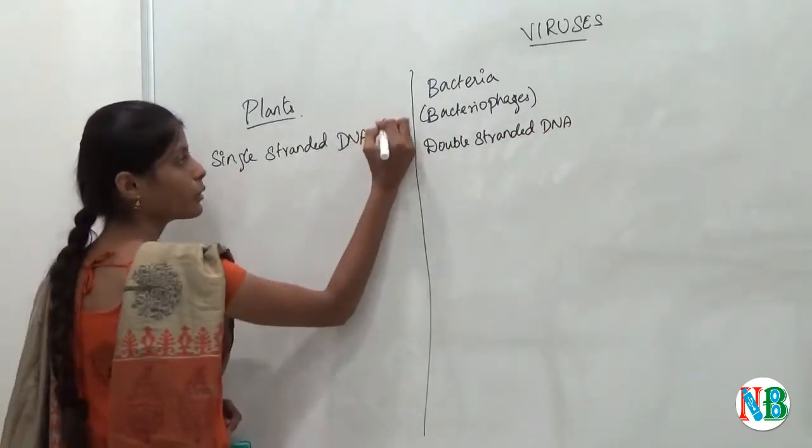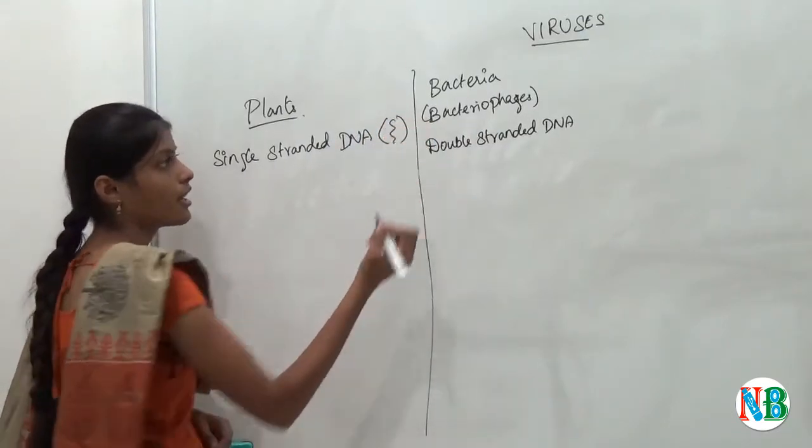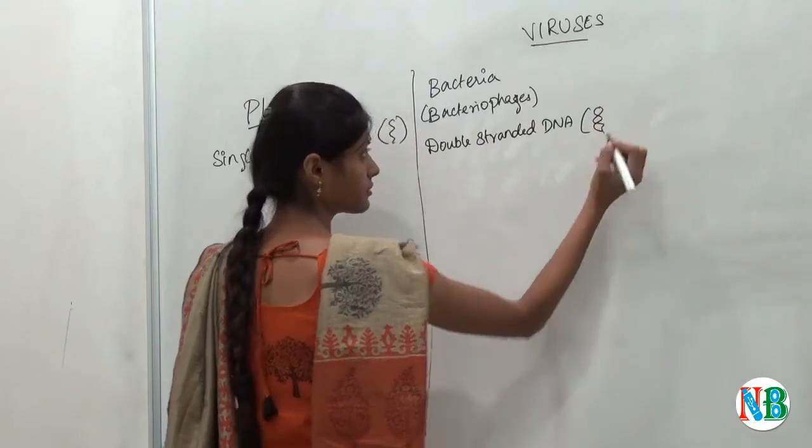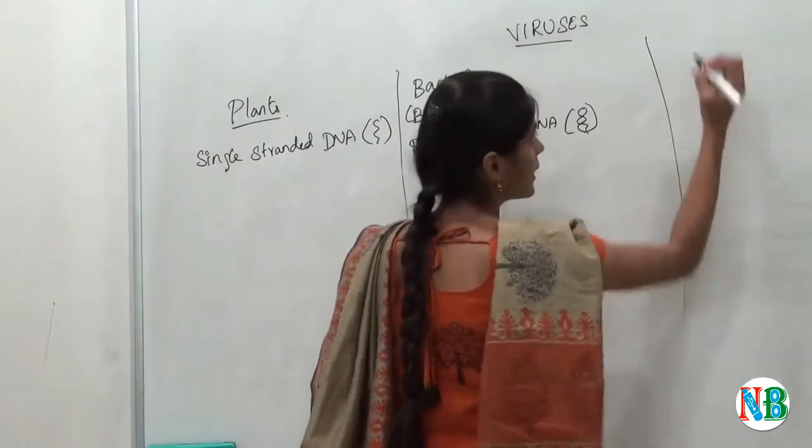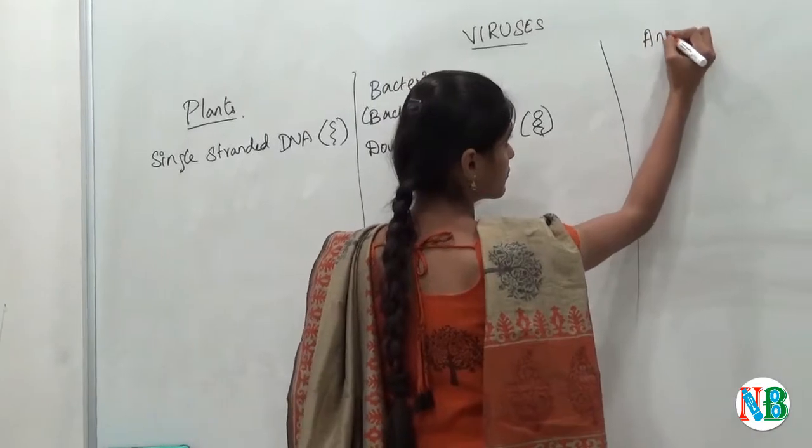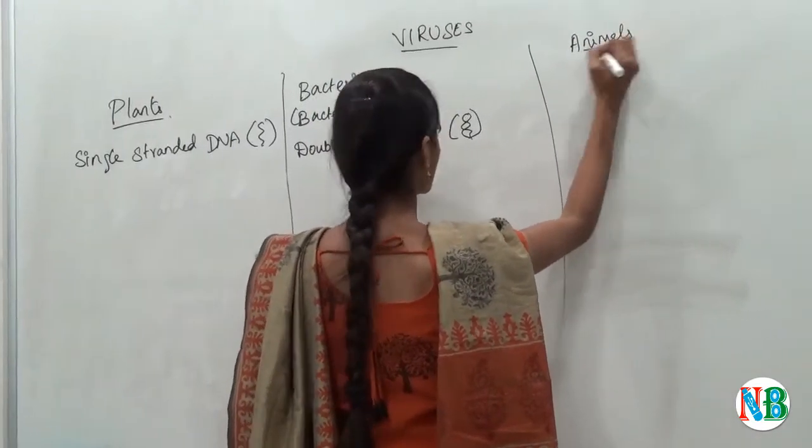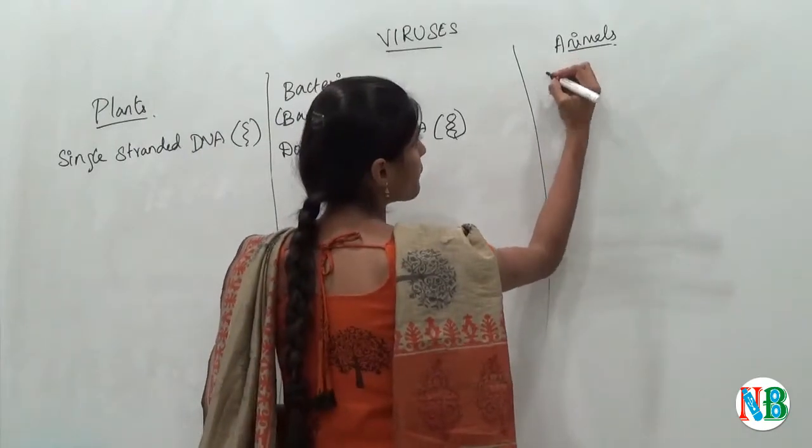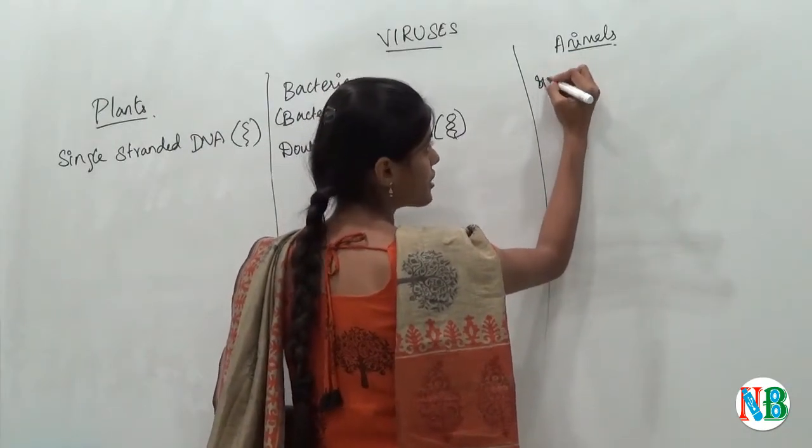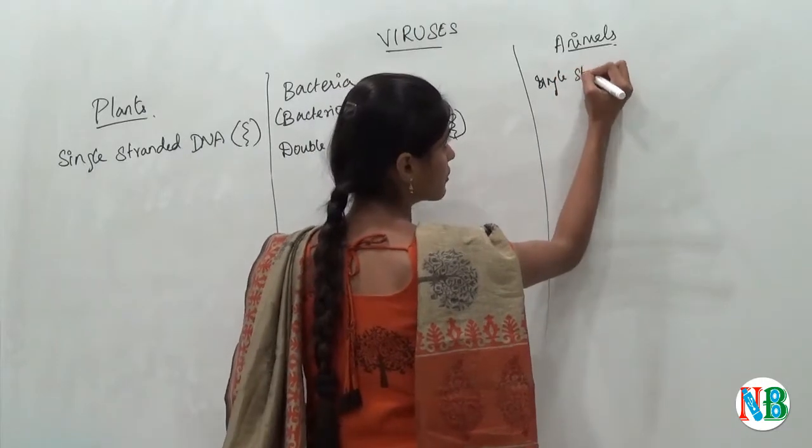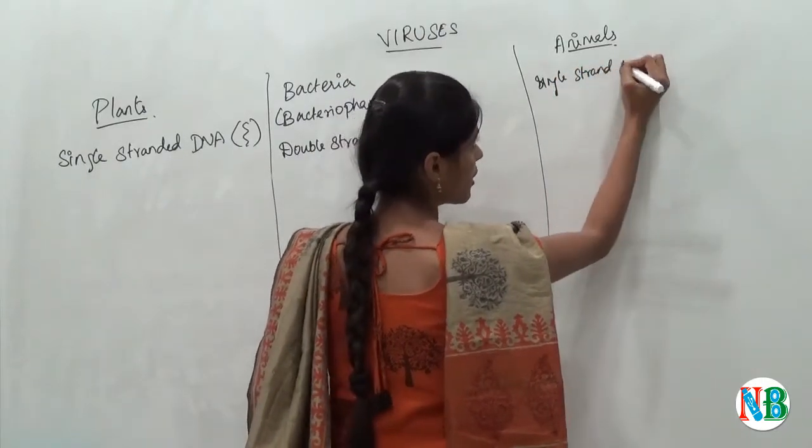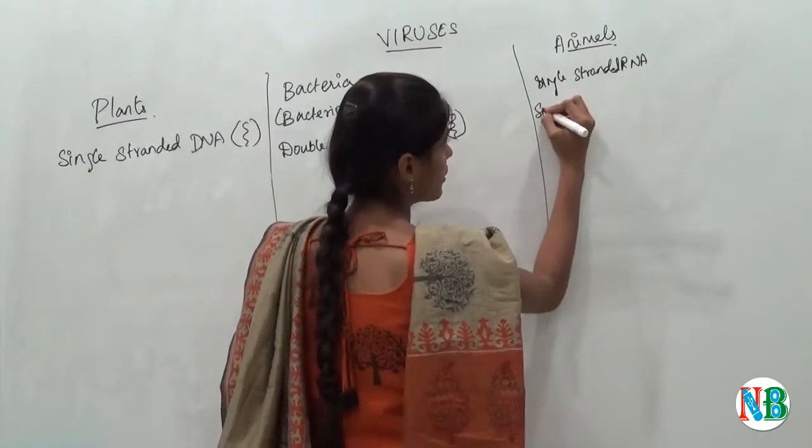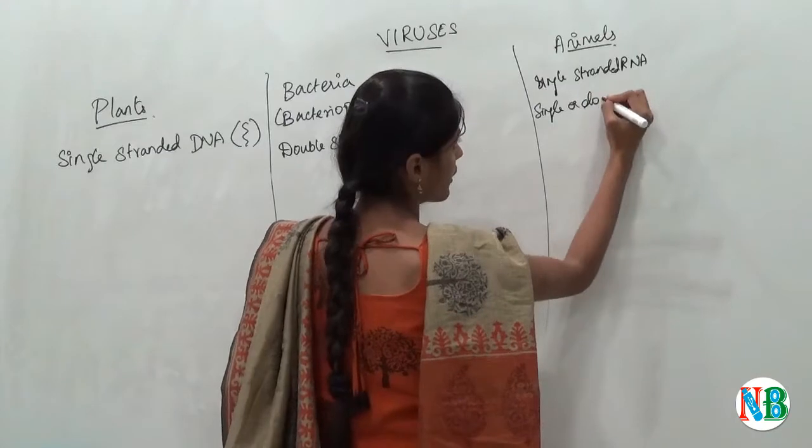Here the DNA will look like this. And here the double-stranded DNA will look like this. Next, in animals. In animals, the virus contains either single-stranded RNA or single- or double-stranded DNA.